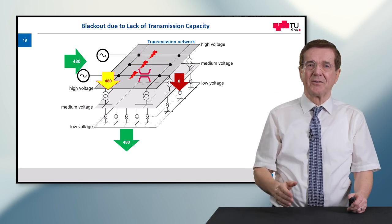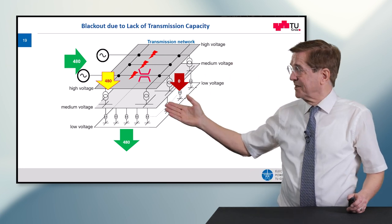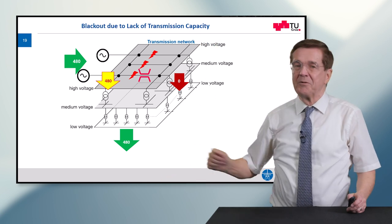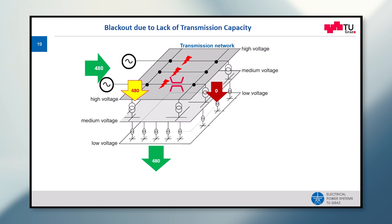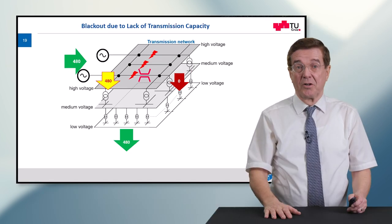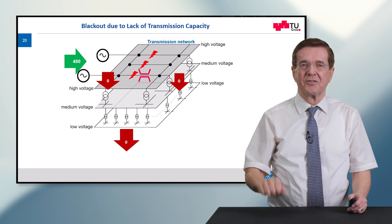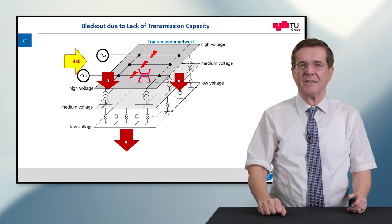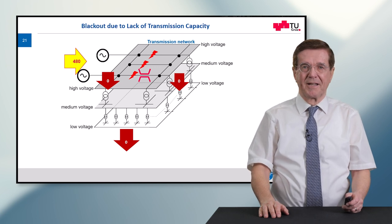First line number two, then line number three — this means the right side of the transmission network is no longer able to bring energy down to the customers. At the same moment the energy flow is transferred to the left side, which as you can see goes into overload and will also trip out. This means the consumers have no energy at all anymore, and most likely the power plants will also run into problems due to the sudden deloading of their turbines.